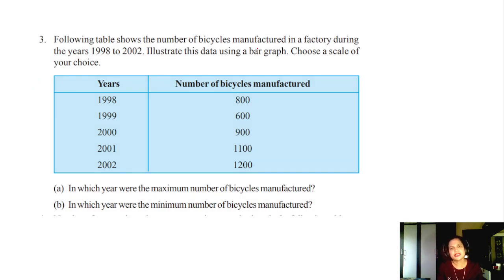Following table shows the number of bicycles manufactured in the factory during the year 1998 to 2002. Number of bicycles are manufactured. Illustrate the data using the bar graph. Bar graph, choose the scale of your choice. In which year were the maximum number of bicycles manufactured? In 2002 it is. Here only we can tell that in which year were the minimum number of bicycles manufactured: 600 in 1999.